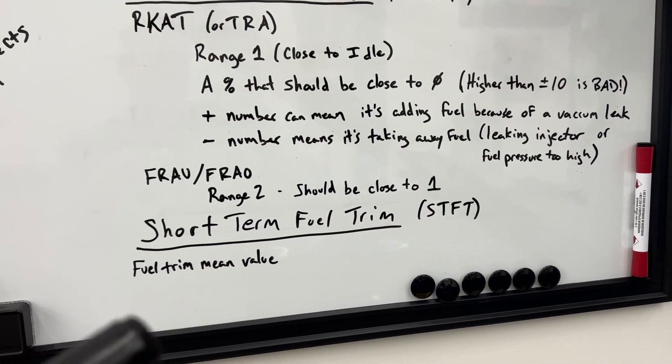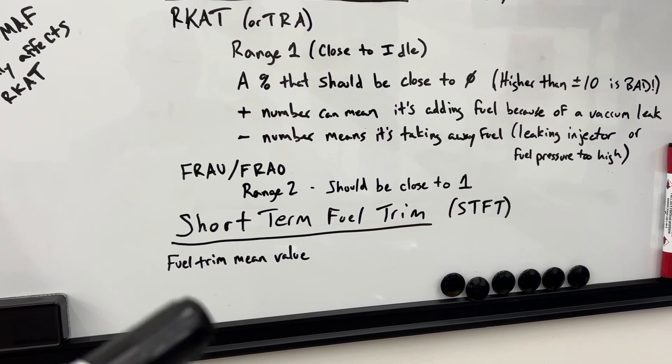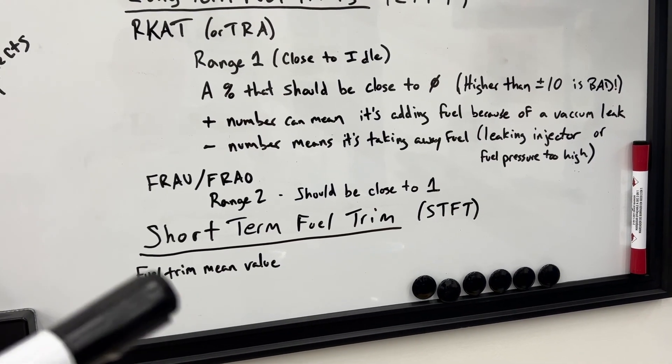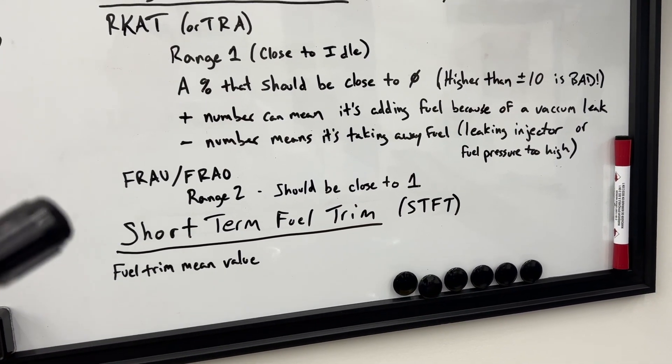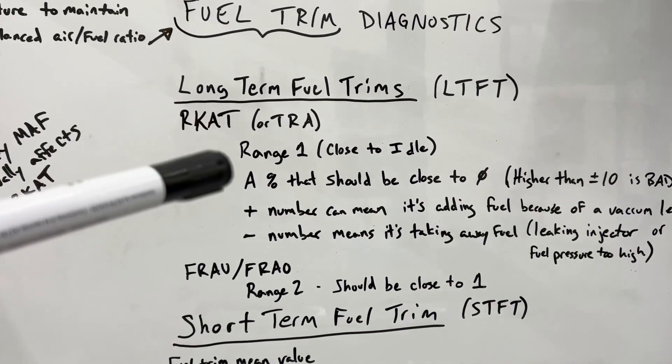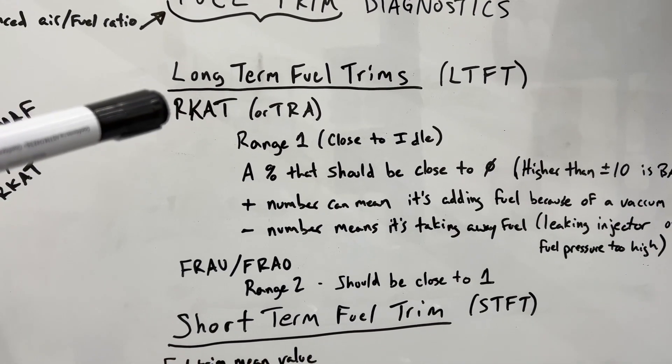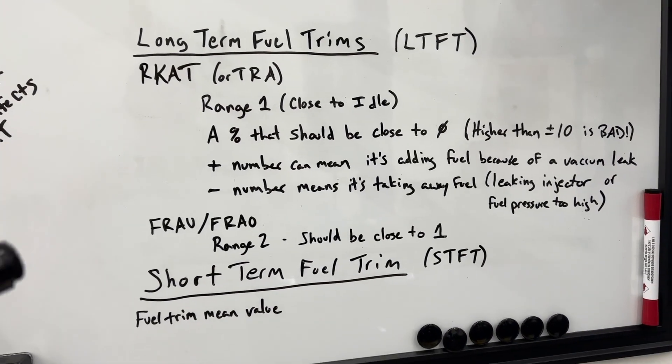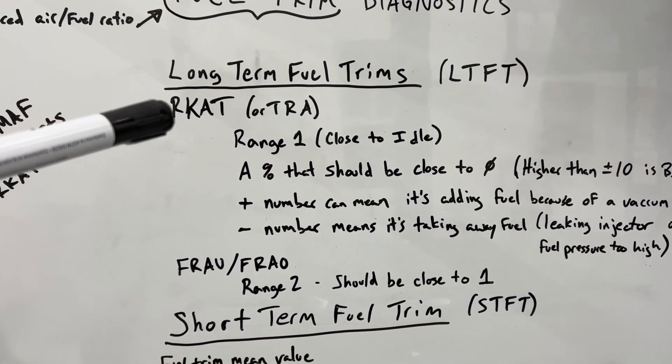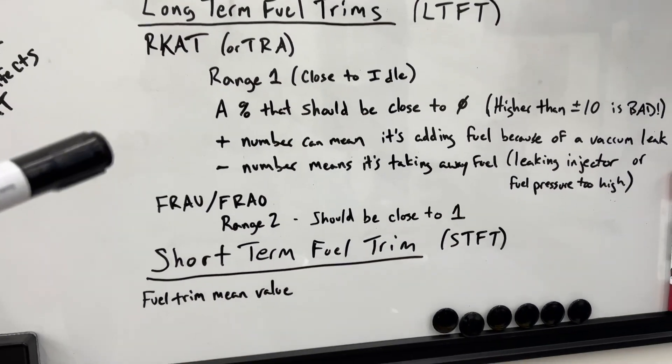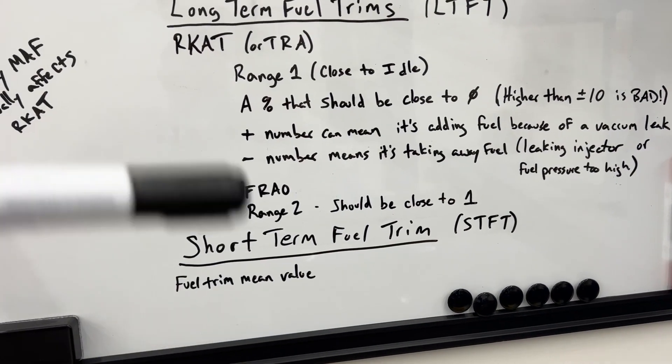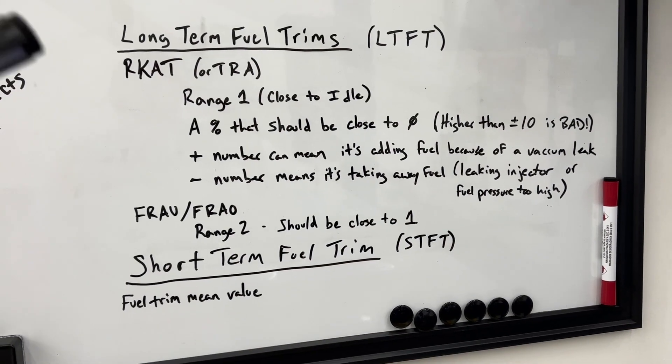So what is the long-term fuel trim then? If your computer notices that it continually needs to add or remove more fuel consistently, and this number is not at zero, or one actually, I think this number is supposed to be at one. Anyway, if it's not where it should be, it sets this thing. So this is like a saved-in-memory setting. So let's say your fuel trim has been at like two for a long time. It's going to set this thing at two to tell it, hey, the next time I start up, just start at two because we know that it's off. And then this short-term fuel trim will continually adjust itself, but it won't have to adjust all the way up to two because that's already taken care of.